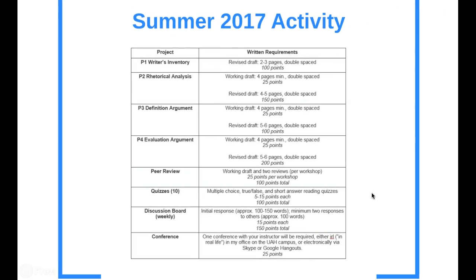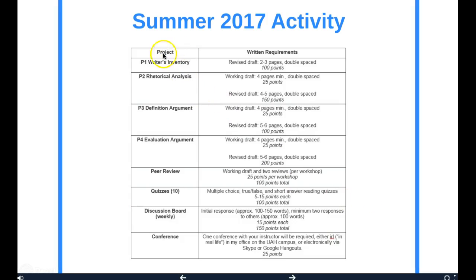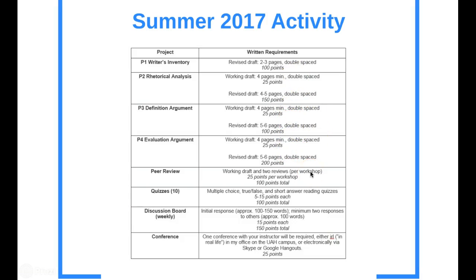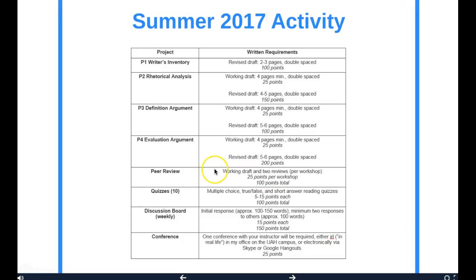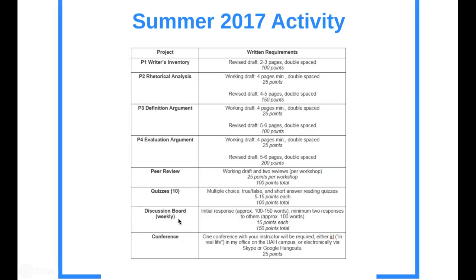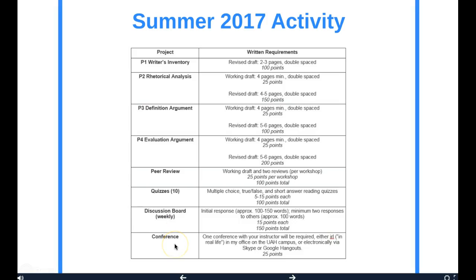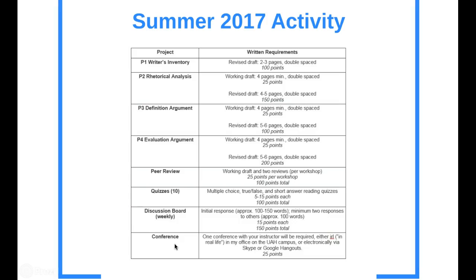On this next screen, a quick overview of the work we'll be doing throughout this semester. We have four major writing projects. For projects two through four, you'll be submitting working drafts and revised drafts of those assignments. Beyond that, we will be doing peer review workshops for all four major projects, a series of quizzes ranging from five to fifteen points each, and weekly discussion board conversations. I will ask you to meet with me at least once in conference sometime after the first assignment comes back to you — either in real life in my office on campus or electronically via Skype or Google Hangouts.